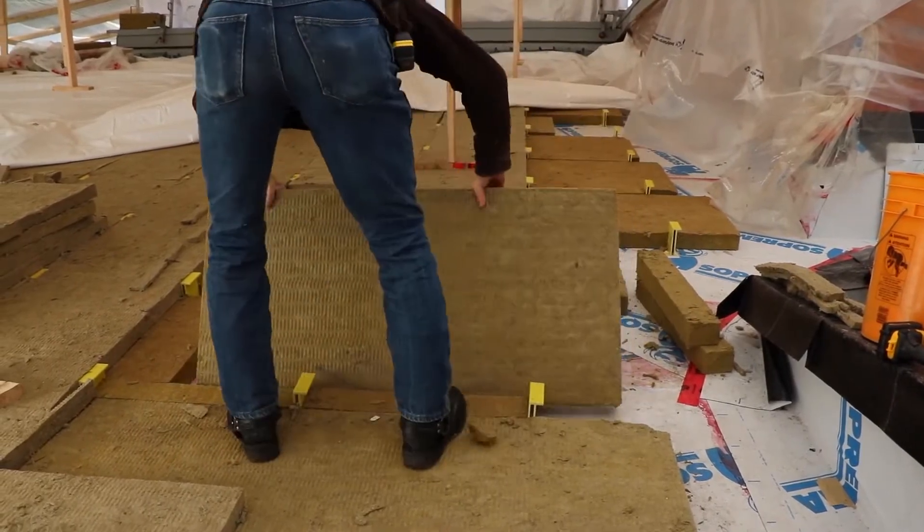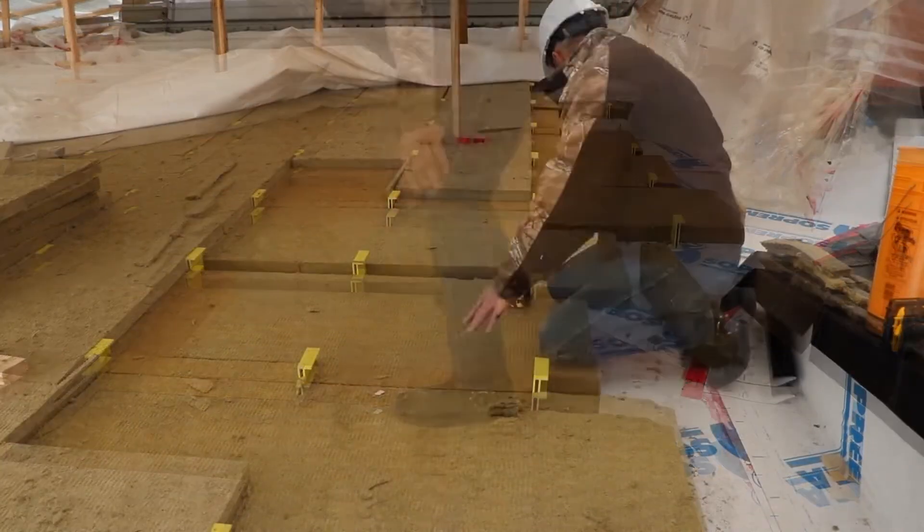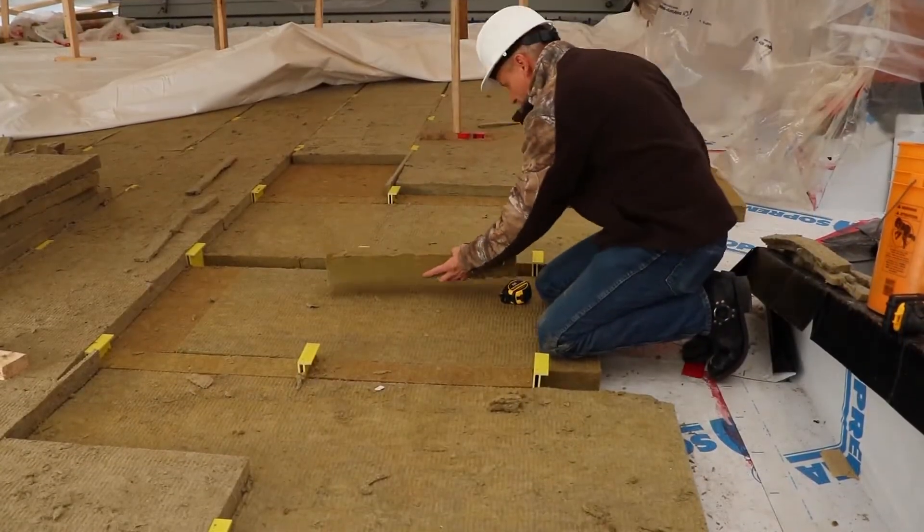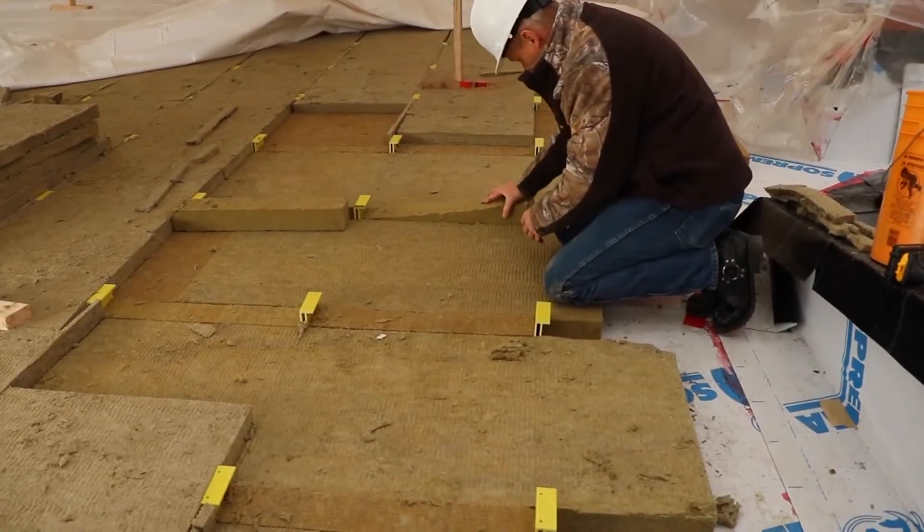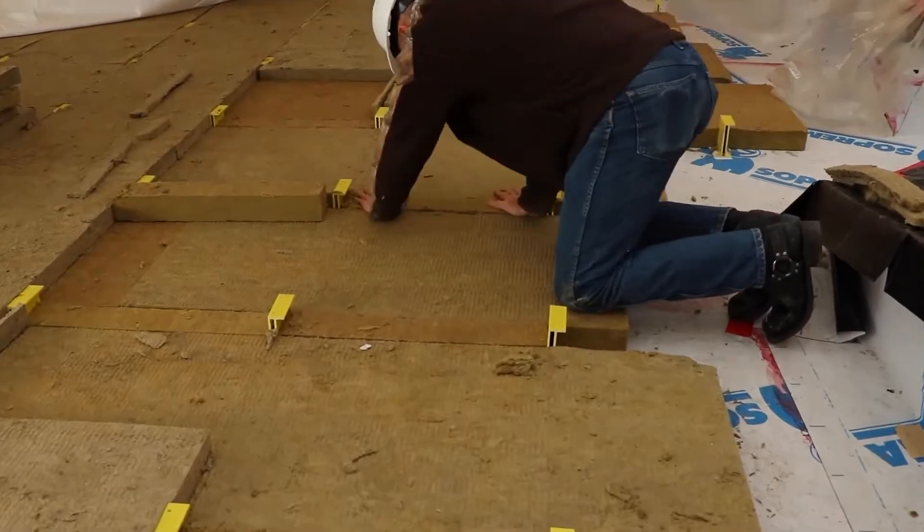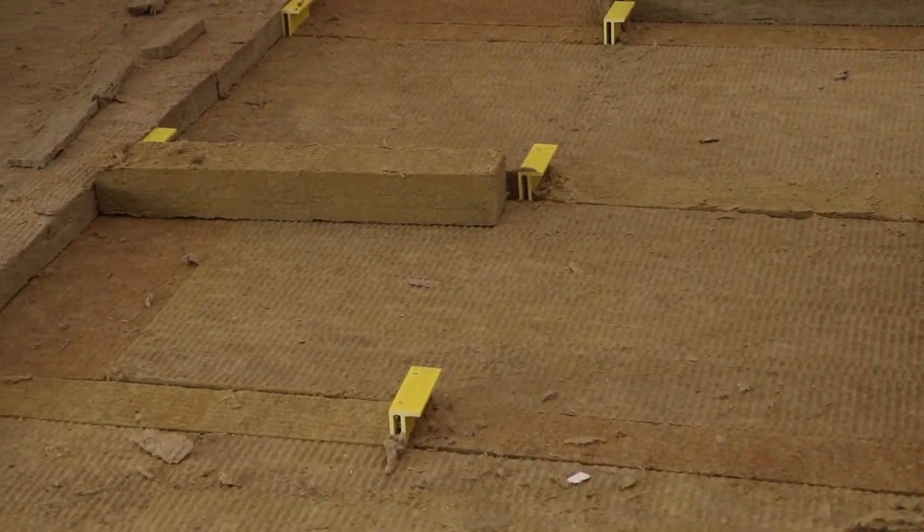Fit semi-rigid insulation boards measuring 2 feet by 4 feet in between rows of clips, ensuring you pressure fit the insulation around the clips. You can prep for the installation by cutting a few boards into pieces measuring 4 inches by 2 feet. Those smaller pieces will fit in the remaining space between clips as shown.